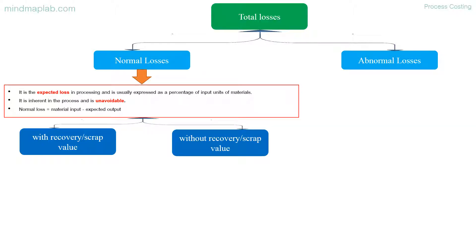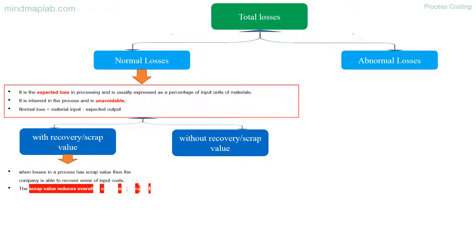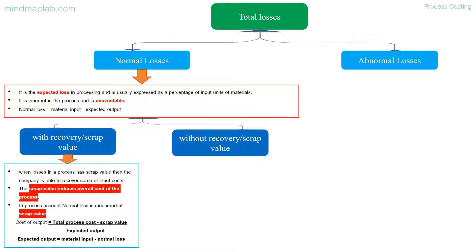Normal loss with recovery scrap value: when losses in a process have scrap value, the company is able to recover some of the input costs. The scrap value reduces the overall cost of the process. In the process account, normal loss is measured at scrap value. Cost of output equals total process cost minus scrap value, divided by expected output, where expected output equals material input minus normal loss.